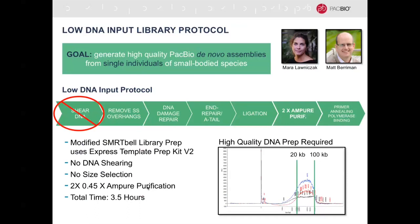The protocol relies on the recently released SmartBell Express Template Prep Kit version 2, which uses an add-only approach with no transfer of material between tubes, to prevent loss of material. The whole prep takes about three and a half hours. In lieu of size selection, we do two washes with AMPure beads to remove very small fragments, and there's an ongoing R&D effort to find ways to remove even larger fragments less than 3 to 5 KB to enrich low-input samples for longer reads. Because we don't rely on shearing to fragment the DNA, we really rely on the genomic extraction protocol to determine a fragment length distribution that lends itself to library prep and sequencing.